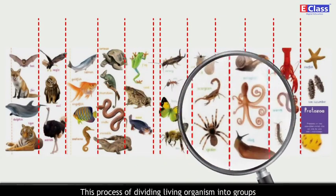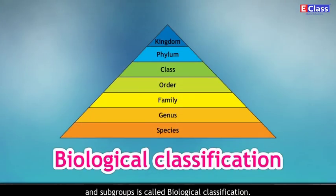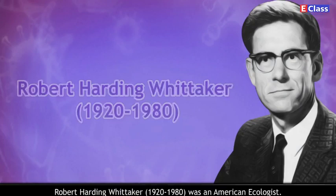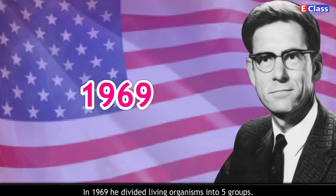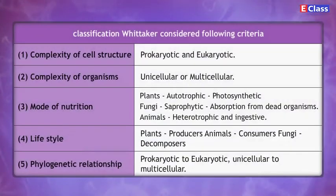This process of dividing living organisms into groups and subgroups is called biological classification. Robert Harding Whittaker (1920–1980) was an American ecologist. In 1969, he divided living organisms into five groups. For this classification, Whittaker considered the following criteria.